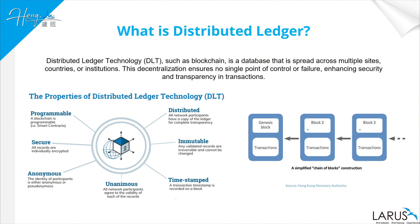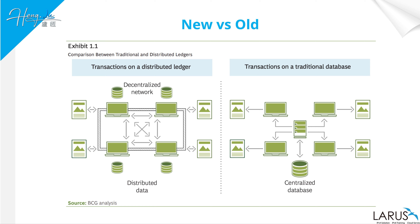It's basically a database spread across different sites, countries, and institutions. Each of the participants, instead of one centralized registration database — just like we see on the right, the centralized database where you have one company holding the record and everybody has to listen to that company — in the distributed and decentralized case, everybody will have their own record, and the record will spread across the entire internet instead of one single company.